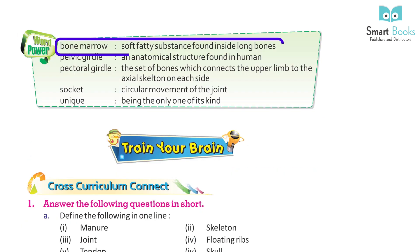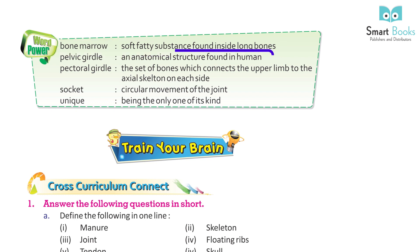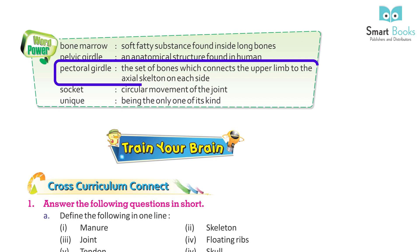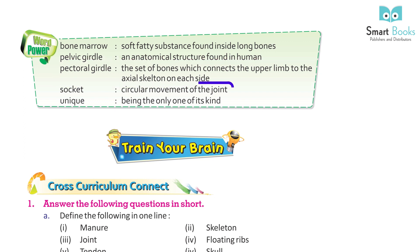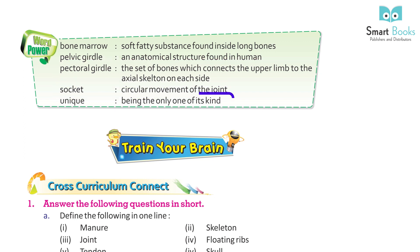Word power: Bone marrow — soft fatty substance found inside long bones. Pelvic girdle — an anatomical structure found in humans. Pectoral girdle — the set of bones which connects the upper limb to the axial skeleton on each side. Socket — circular movement of the joint. Unique — being the only one of its kind.